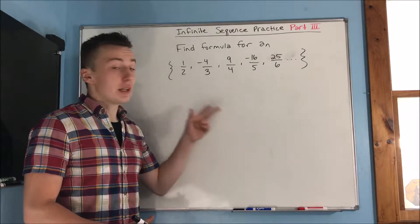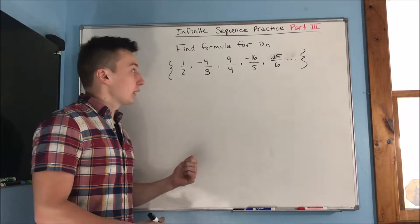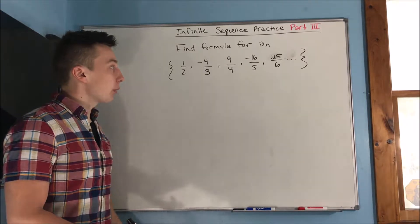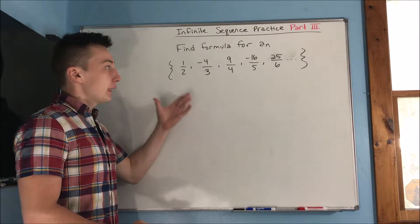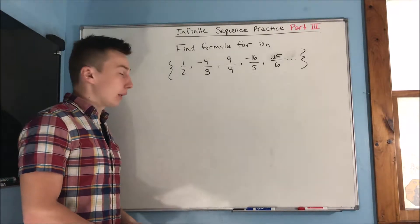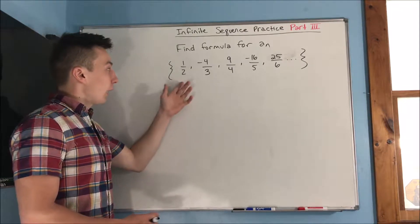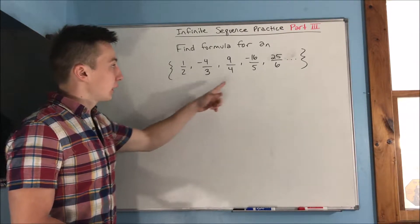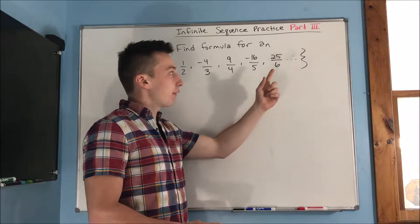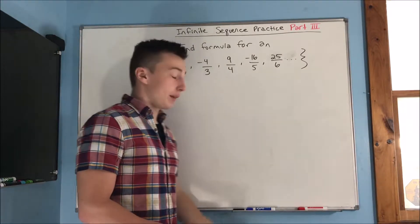All right, so this is going to be part three of our infinite sequence practice. So we have our first problem up on the board here. We want to find the formula for a sub n for this infinite sequence right here. We have one half, negative four thirds, nine fourths, negative sixteen fifths, twenty-five sixths, and it goes on and on.